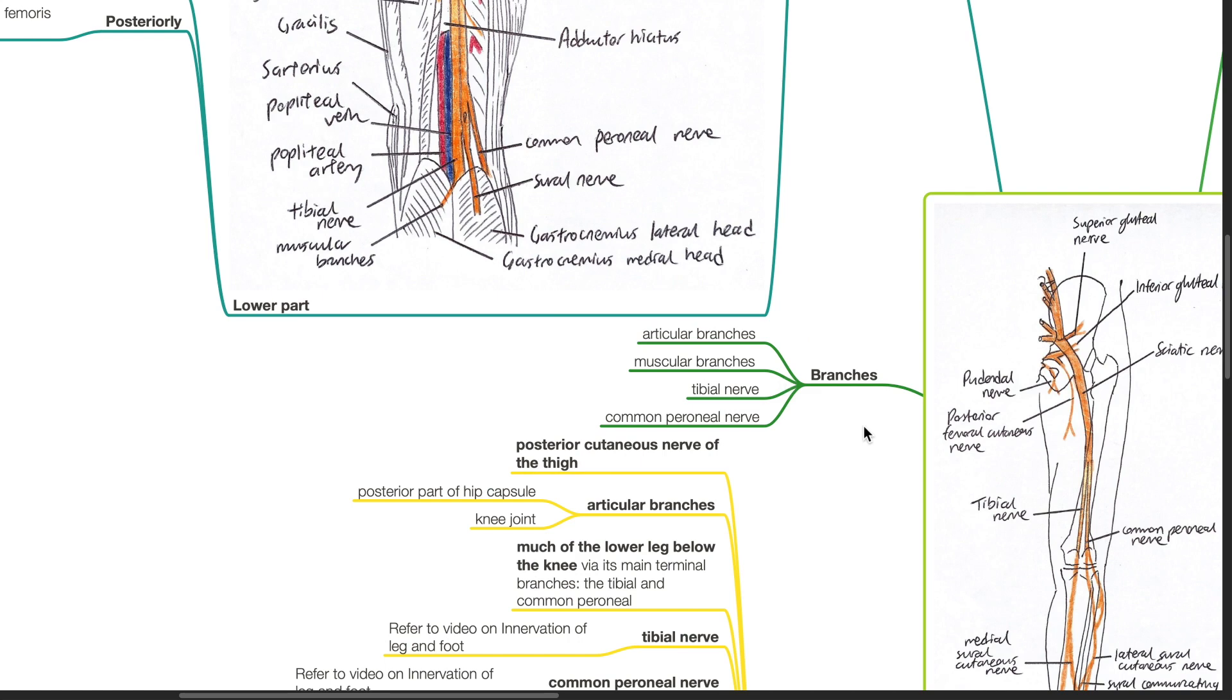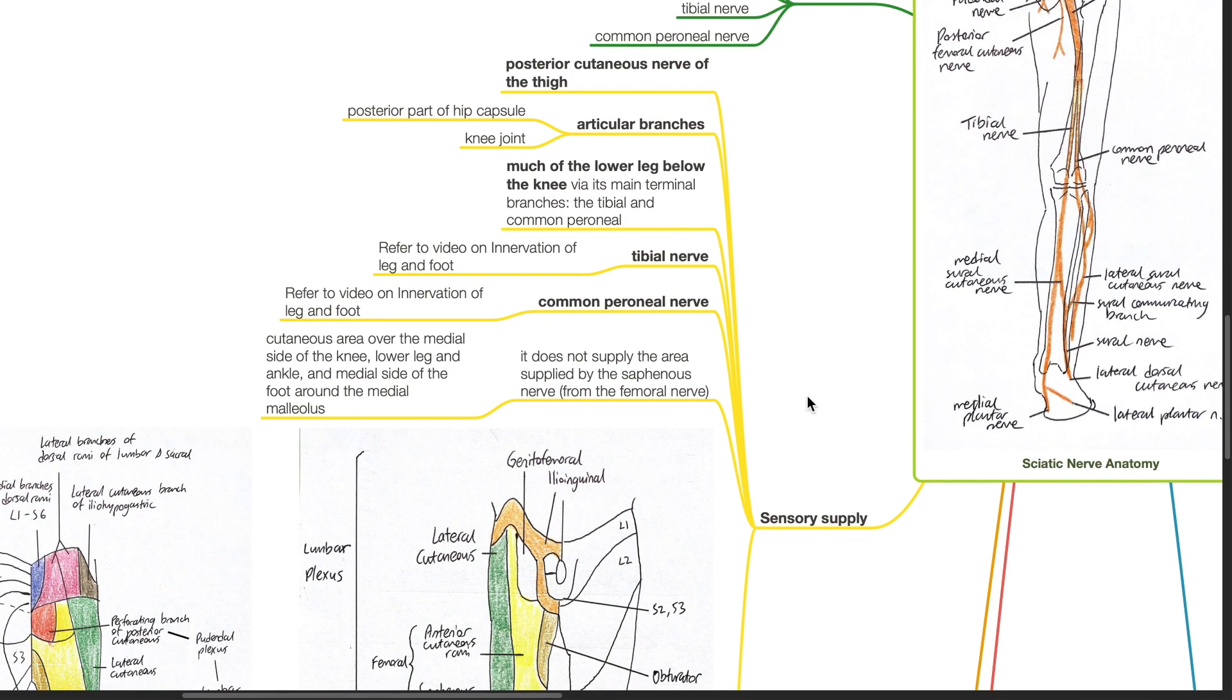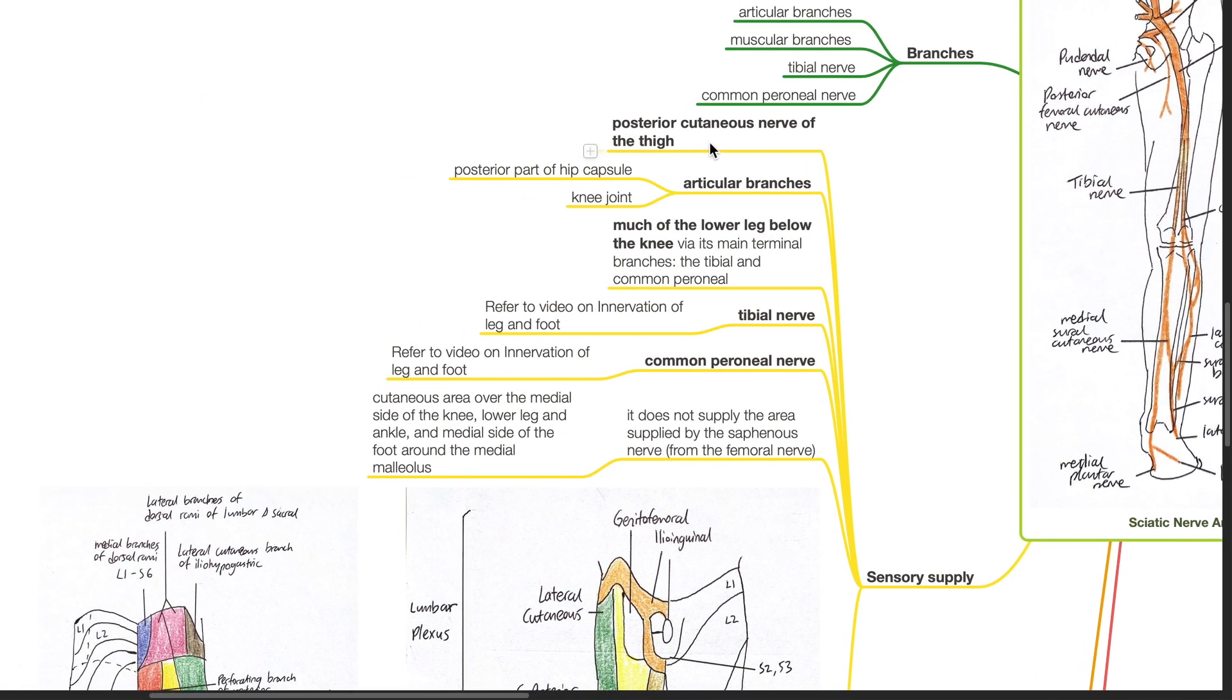Branches includes articular branches, muscular branches, the tibial nerve and the common peroneal nerve. Sensory supply. The posterior cutaneous nerve of the thigh. Articular branches which supplies the posterior part of the hip capsule and the knee joint. The sciatic nerve supplies much of the lower leg below the knee via its main terminal branches, the tibial and common peroneal nerve. Kindly refer to the video on innervation of the leg and foot for further details.